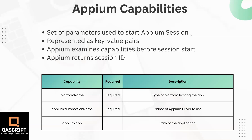There are some mandatory capabilities. The two we have already seen are platformName and automationName. platformName is the type of platform hosting the app - either Android or iOS. automationName is the framework on which the Appium automation is running - it could be XCUITest for iOS or UIAutomator for Android. These are the two required Appium capabilities which you need to define for every session.